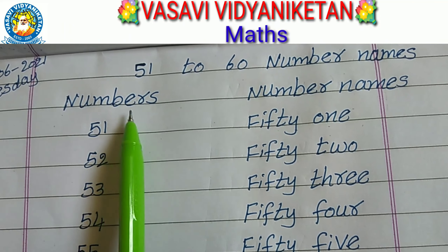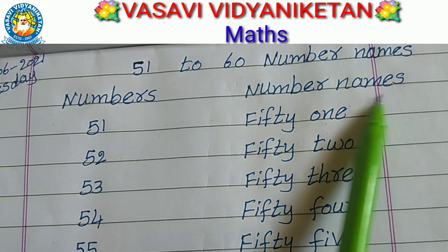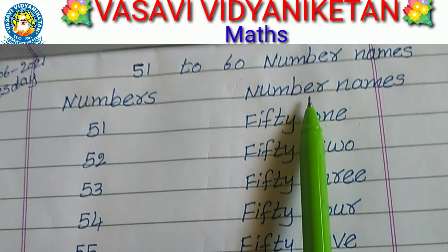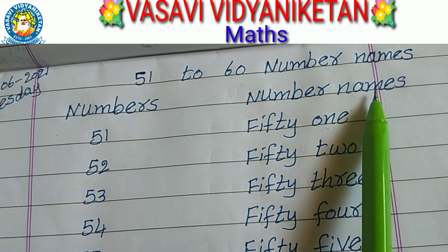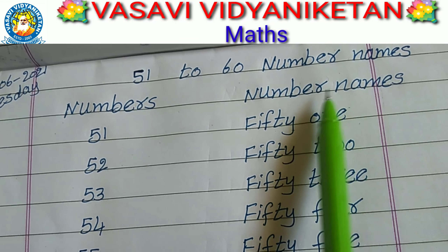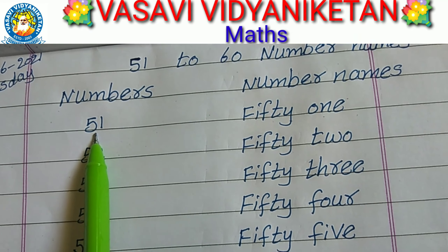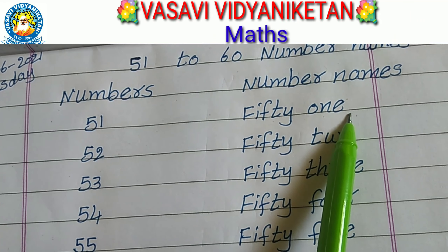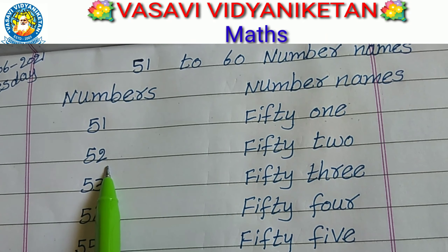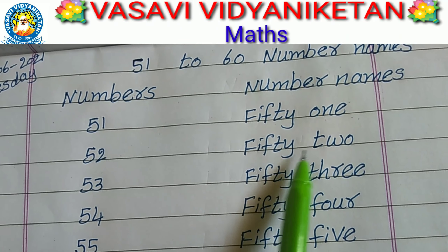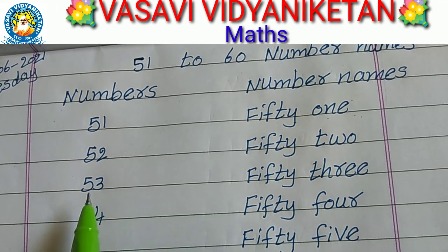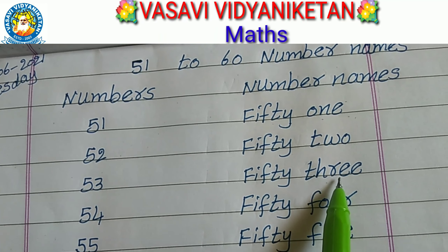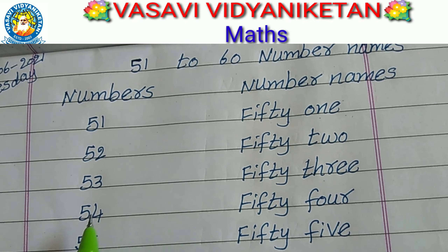Repeat again. Numbers. Number names. N-U-M-B-E-R-S. Numbers. N-U-M-B-E-R N-A-M-E-S. Number names. 51. F-I-F-T-Y O-N-E. 51. 52. F-I-F-T-Y T-W-O. 52. 53. F-I-F-T-Y T-H-R-E-E. 53.